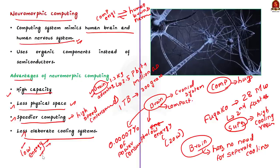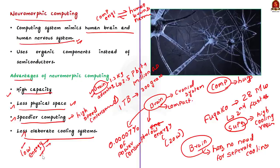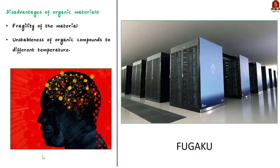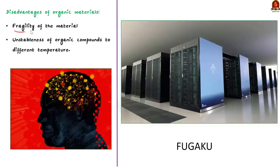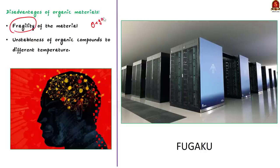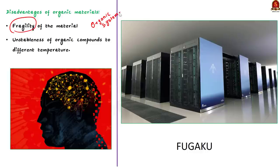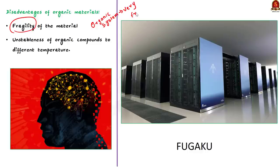But neuromorphic computing also has some disadvantages. The first is fragility. All organic systems are by nature very fragile. Comparing our brain and a computer — our brain is the fragile one. So this is the first major disadvantage of neuromorphic computing.